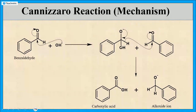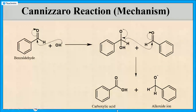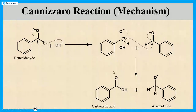Here we can observe that in this product, the transfer of the hydride ion along with its electrons takes place. So this compound is oxidized and the formation of carboxylic acid takes place. This aldehyde receives the hydride ion, so this aldehyde gets reduced and the formation of the alkoxide ion takes place. So here one molecule gets oxidized and another molecule gets reduced.